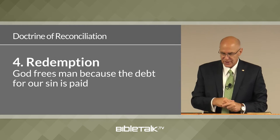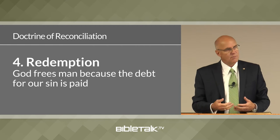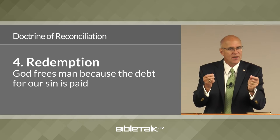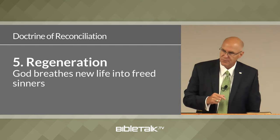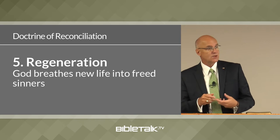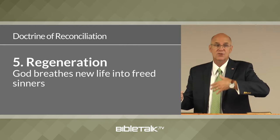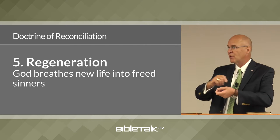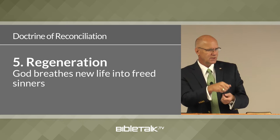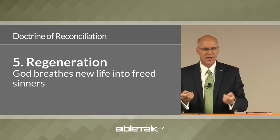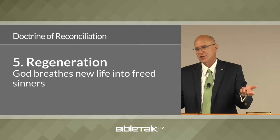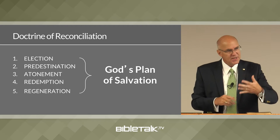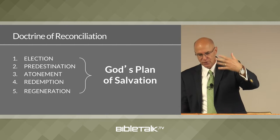The sub-doctrine of redemption explains what happens because of atonement: God frees man because the debt of our sin is paid through Christ. The fifth sub-doctrine is regeneration, which explains what happens to man because he is redeemed — he is now free to live a new life. Whenever someone talks about being 'born again,' they're explaining regeneration. These five sub-doctrines — election, predestination, atonement, redemption, and regeneration — constitute the plan of salvation.